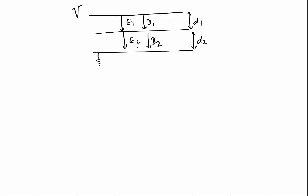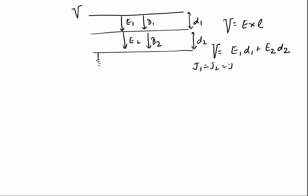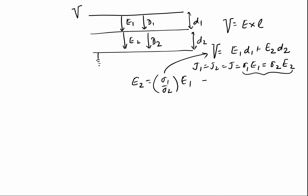We need to find the values of E₁ and E₂. In terms of magnitude, V = E₁d₁ + E₂d₂. Further, since J₁ = J₂ = J = σ₁E₁ = σ₂E₂, we can find E₂ in terms of E₁: E₂ = (σ₁/σ₂)E₁. Substituting into the voltage equation: V = d₁E₁ + d₂(σ₁/σ₂)E₁, which gives V = [(d₁σ₂ + d₂σ₁)/σ₂] × E₁.